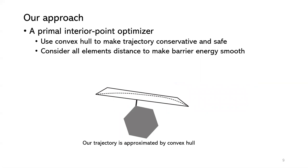First, the primal interior point optimizer uses a convex hull to make the trajectory conservative and safe. As the bottom figure shows, the dotted line is our trajectory and the polygon outside it is the convex hull, while the gray polygon is the obstacle. If the convex hull is outside the obstacle, the trajectory is always outside the obstacle — so our method is safe. We consider all elements from the convex hull, like points, edges, and triangles, and all elements from the obstacles, and compute their pairwise distances in the barrier function. In that way, we can make the barrier energy smooth, which is good for Newton-type methods to optimize.